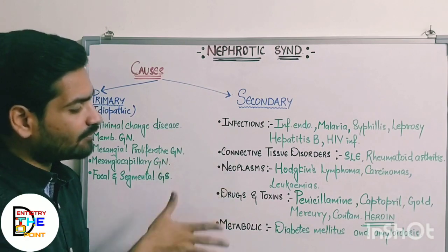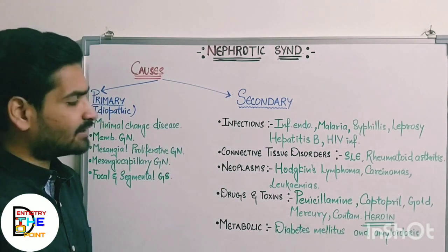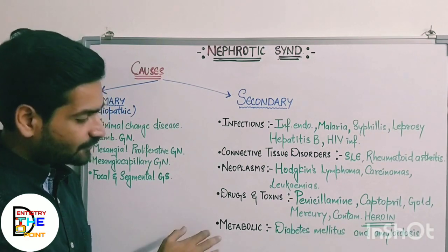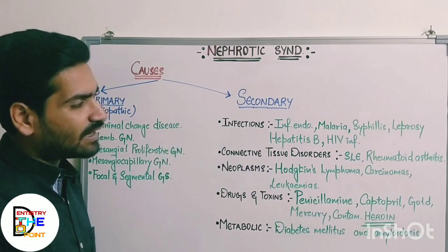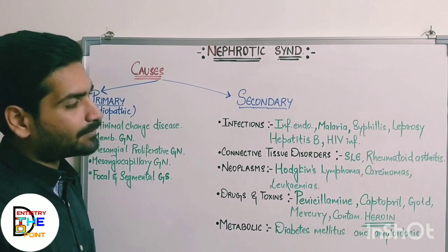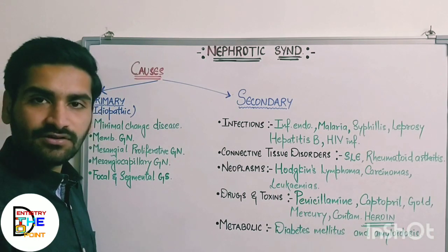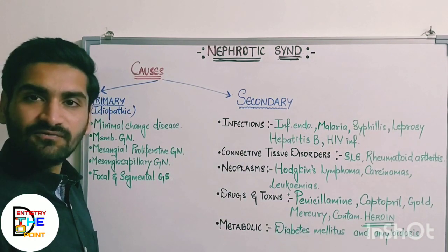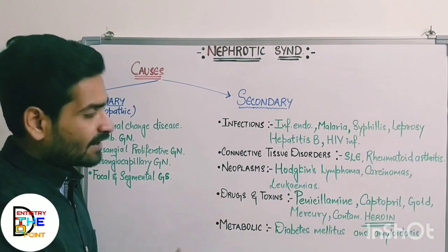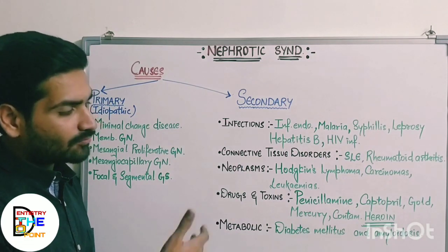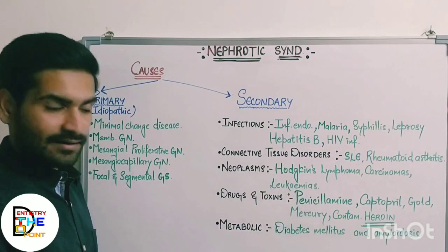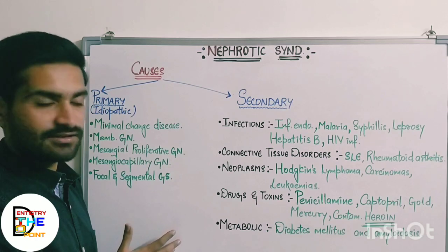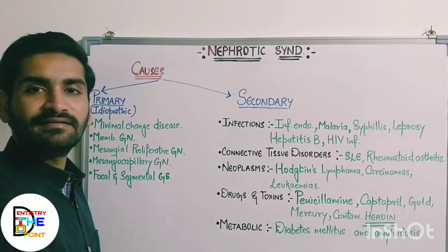In the secondary causes we have five categories: infections, connective tissue disorders, neoplasms, drugs and toxins, and metabolic disorders. In infections: infective endocarditis, malaria, syphilis, leprosy, hepatitis B and HIV. In connective tissue disorders: SLE and rheumatoid arthritis. In neoplasms: Hodgkin's lymphoma, various carcinomas and leukemia. In drugs and toxins: penicillamine, captopril, and toxins like gold, mercury and contaminated heroin. In metabolic disorders: diabetes mellitus and amyloidosis.